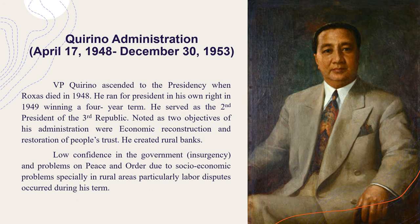Quirino Administration, April 17, 1948 to December 13, 1953. Vice President Elpidio Quirino ascended to the presidency when Roxas died in 1948. He ran for president in his own right in 1949, winning a four-year term. He served as the second president of the Third Republic. Noted as two objectives of his administration were economic reconstruction and restoration of people's trust. He also created rural banks. Low confidence in the government and problems on peace and order due to socio-economic problems, especially in rural areas, particularly labor disputes, occurred during his term.